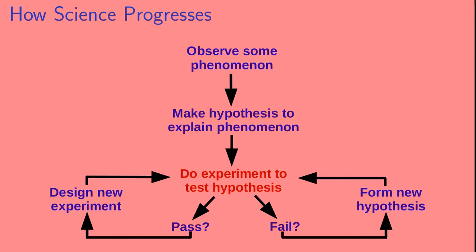Now, if the hypothesis passes the experimental test, then we design a new experiment and do a new experiment to test the hypothesis. So science progresses through this continuing process of forming new hypotheses and designing new experiments.